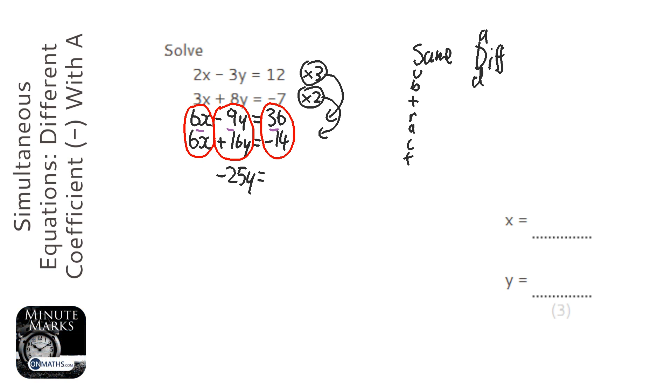And we've got 36 take away minus 14. Now that's going to be the same as a plus. When you have two minuses next to each other, it will be a plus. So that's going to be 50.